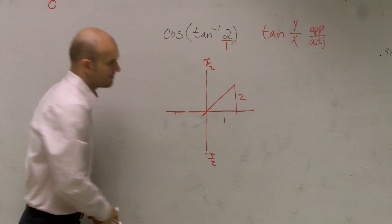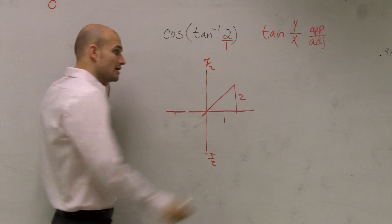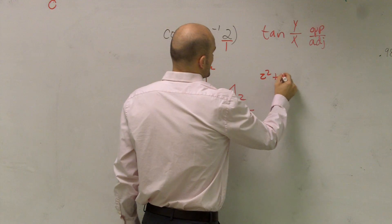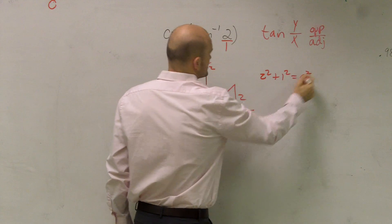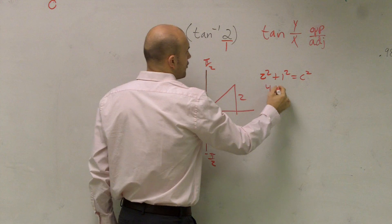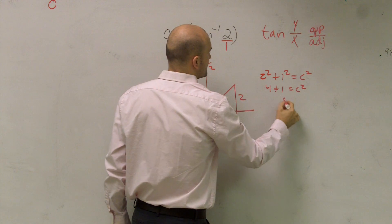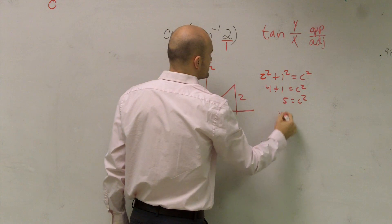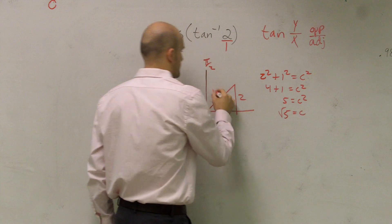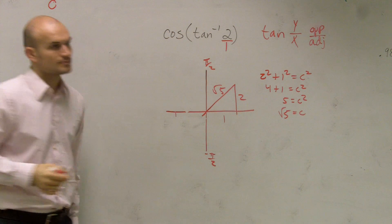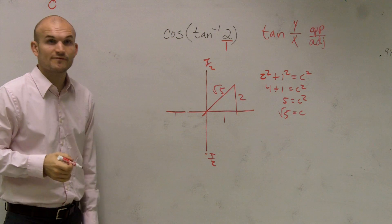So, let's just erase that. Now, let's use the Pythagorean Theorem to solve this. 2 squared plus 1 squared equals c squared. So, therefore, I get 4 plus 1 equals c squared. 5 equals c squared. Take the root. So, square root of 5, there.